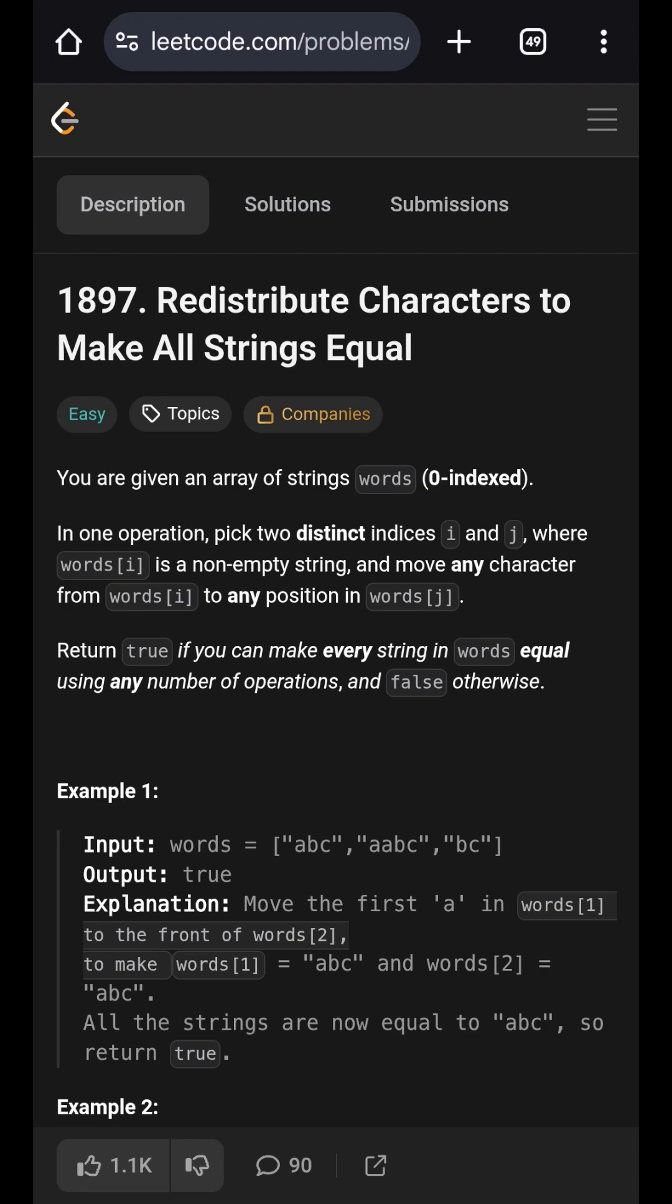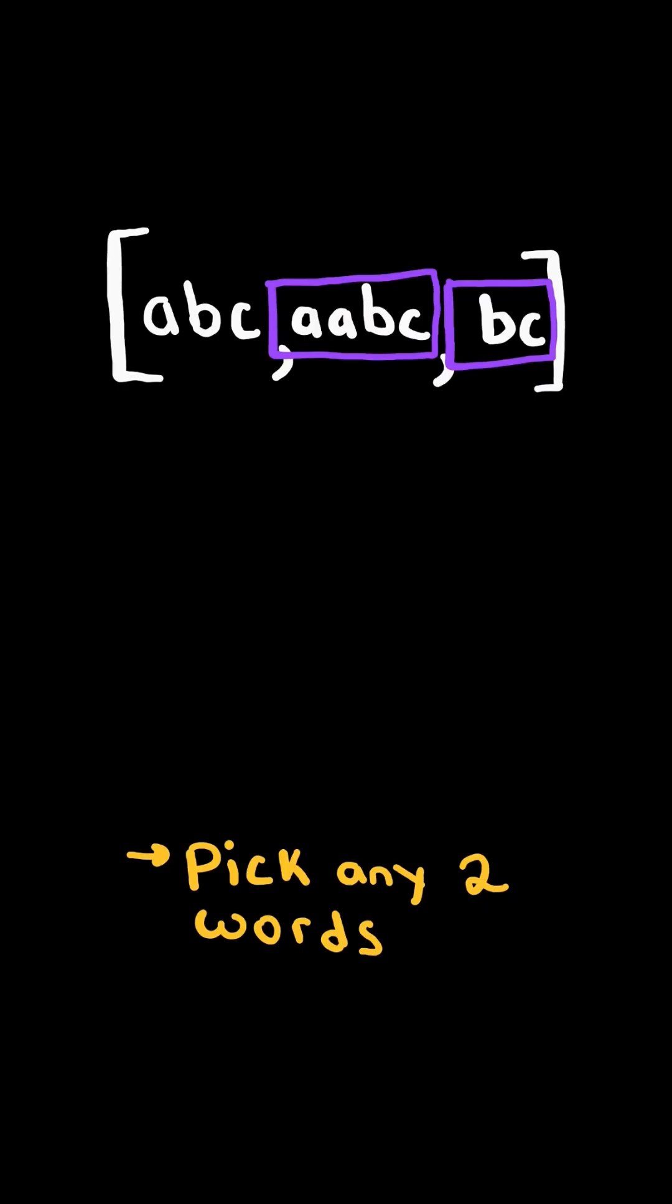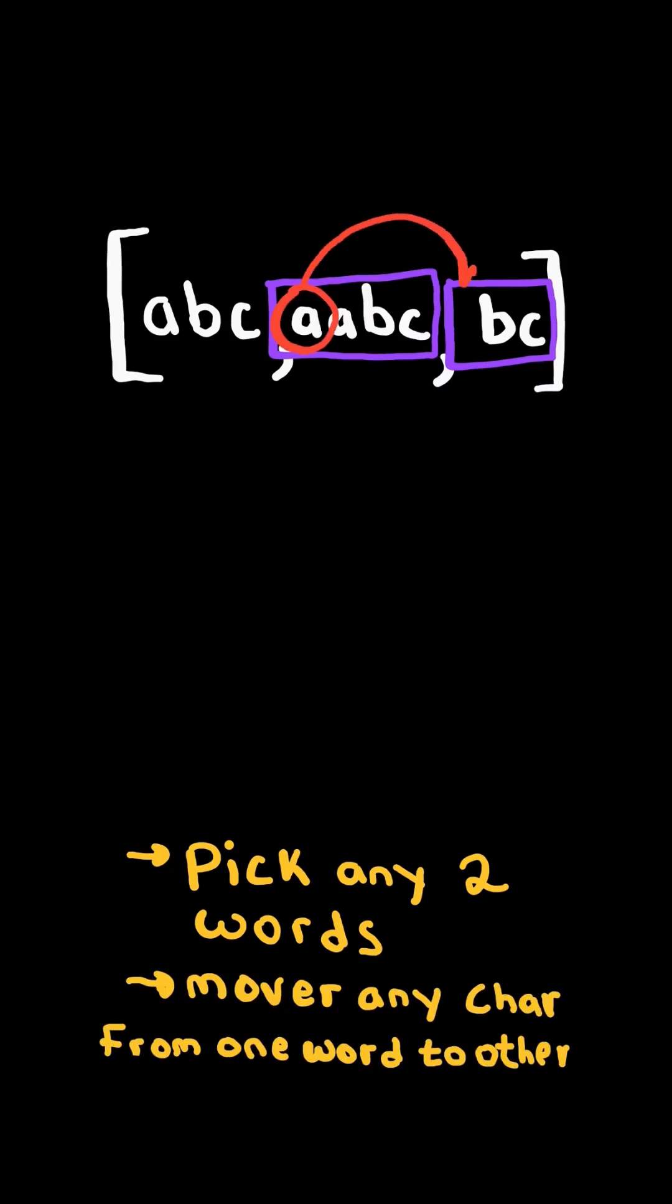Redistribute characters to make all strings equal. In one operation, pick any two words and move any character from one word to another. We can perform as many operations and return true if every word can be equal.